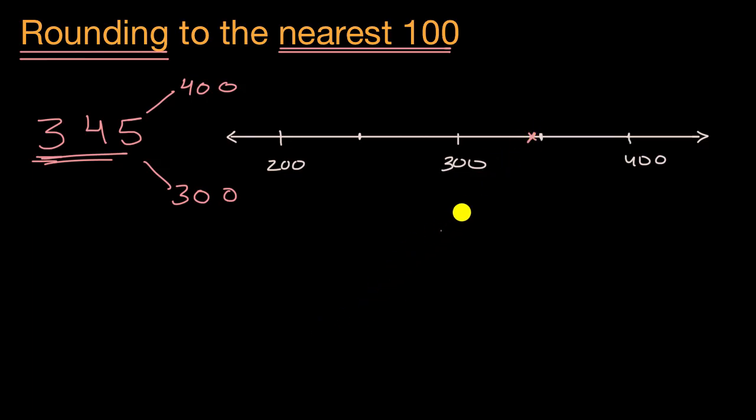So which hundred is it closer to? Are we closer to 300 or are we closer to 400? Well, you can visually see 350 is right in between. It's 50 away from 300 and 50 away from 400. So 345 is going to be a little bit closer to 300. So in this situation, if we're rounding to the nearest 100, we would round down to 300.